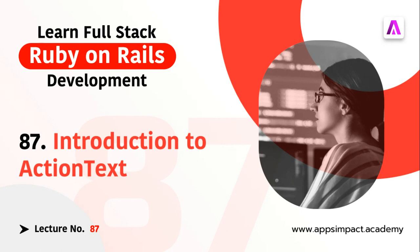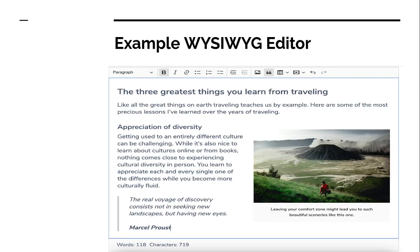Before defining Action Text, let's discuss what it is in general and how previous Rails versions deal with it. Consider a real world example where you have a blog model with two attributes: title and description. We usually take title as a string and description as text, because the blog description might be a very long paragraph or set of paragraphs.